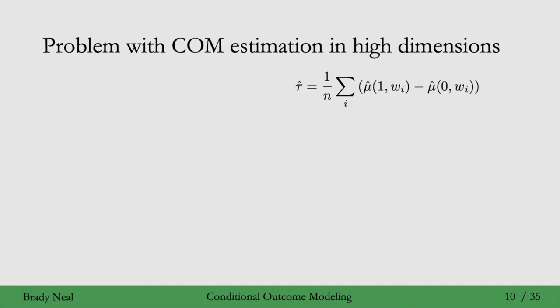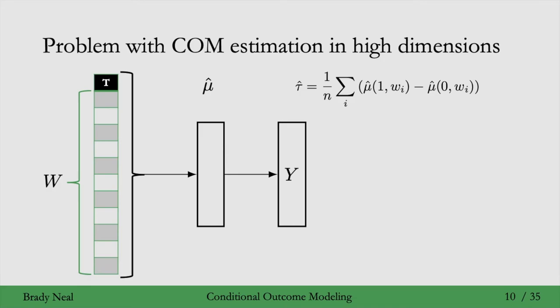Now imagine that we're using COM estimation in high dimensions. So the w vector here is high dimensional and t is a scalar, only one dimensional. And we're fitting a model mu hat to this data. So here I've depicted a neural network, but you could imagine any model for this. It's reasonable to think that the model could ignore t here. Because t is only one dimension in the high dimensional vector of input to the model. So say w is 100 dimensional, then t is one out of 101 dimensions.